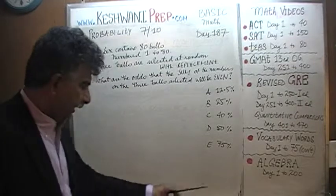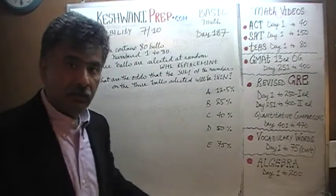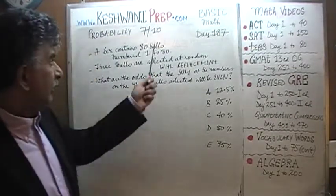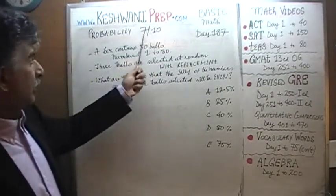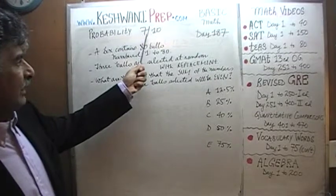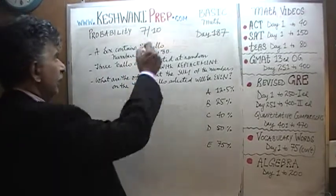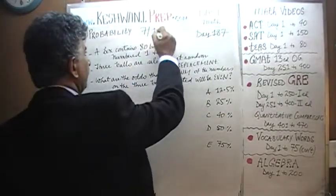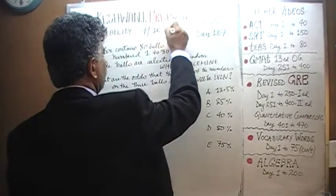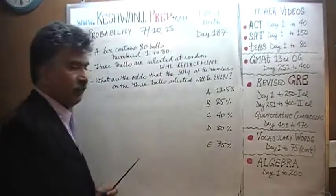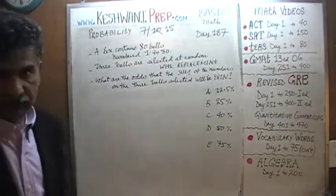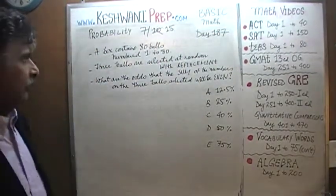Originally I had planned to do 10 videos on the topic of probability — hence the tag here '7 of 10.' But I have changed my mind. Instead of 10, we are going to have 5 more, so this is the 7th one in a series of 15.